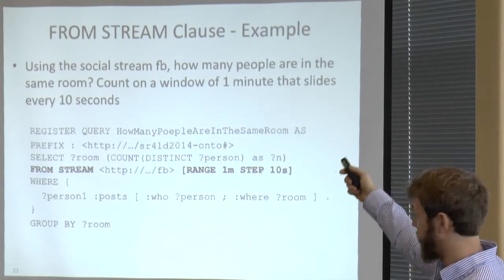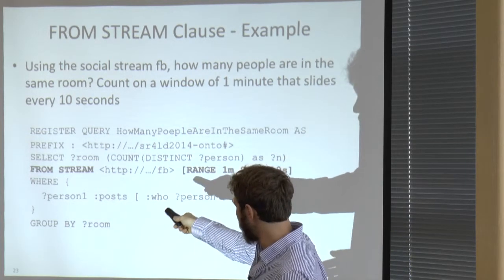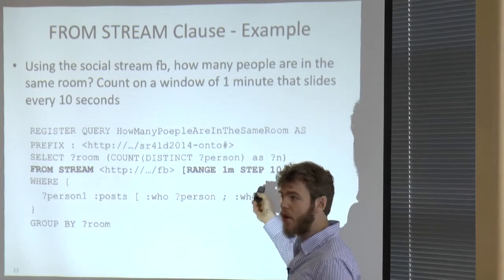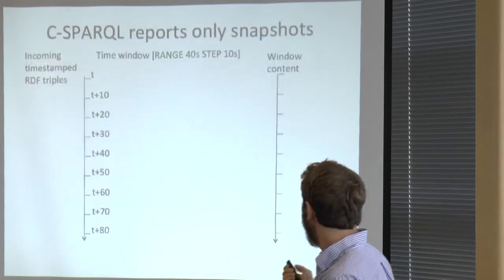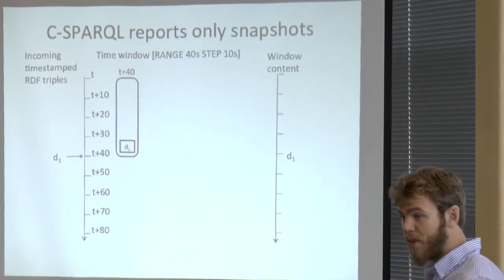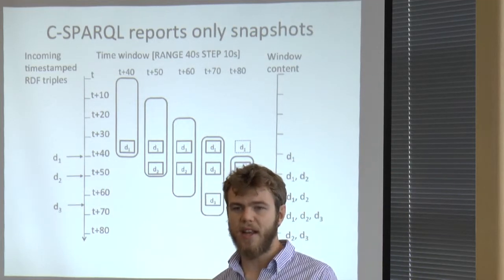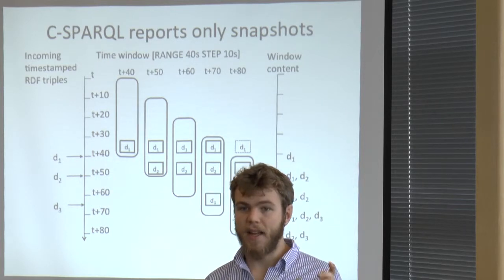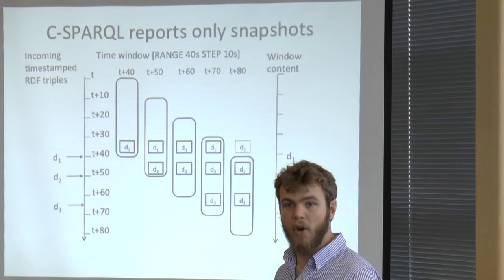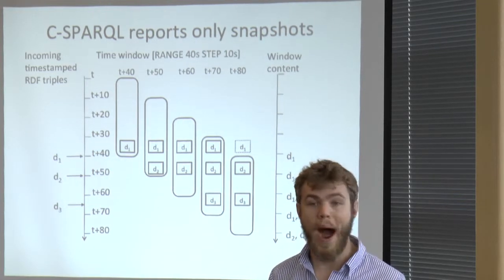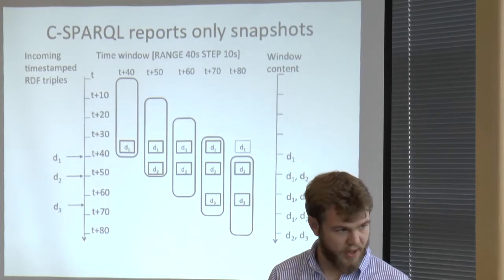Using the Facebook social stream as an example and focusing on targeting: in the query we have the URI of our stream, and the window specification done by the RANGE operator — which gives the dimension — and the STEP as the slide parameter. This is a sliding logical window. C-SPARQL exploits the same semantics as EPL but outputs as soon as a triple comes in. C-SPARQL always outputs the whole content of the window because it is designed for naive reasoning, needing everything to be recomputed every time.